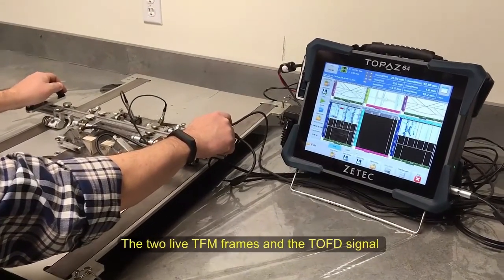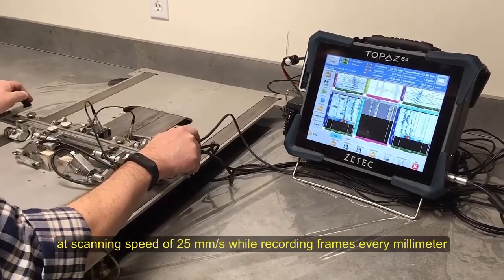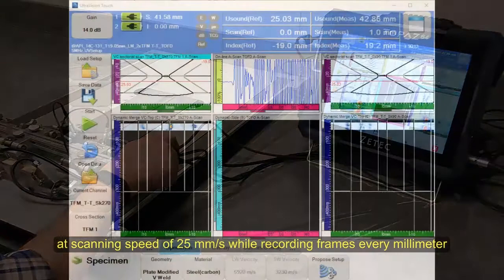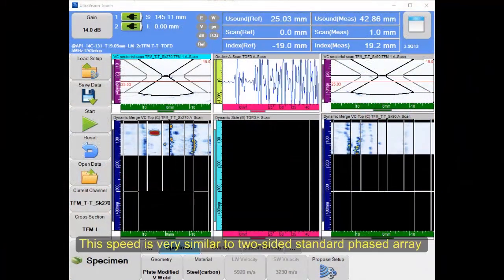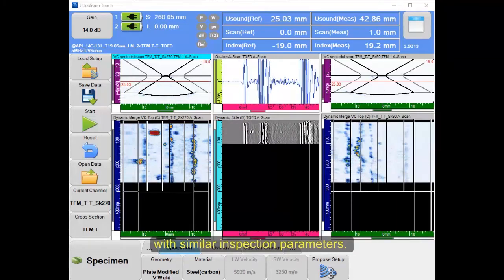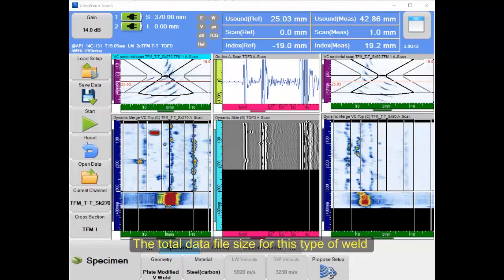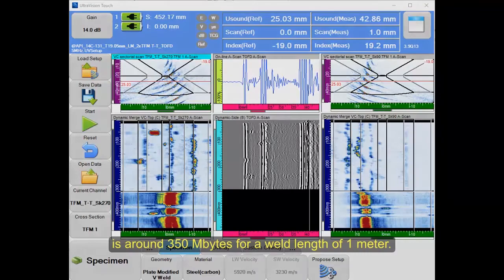The two live TFM frames and the TOFD signal are recorded simultaneously at scanning speed around 25 mm per second, while recording frames every millimeter. This speed is very similar to two-sided standard phased array with similar inspection parameters. The total data file size for this type of weld is around 350 MB for a weld length of one meter.